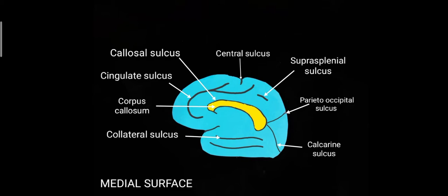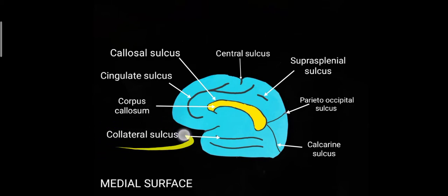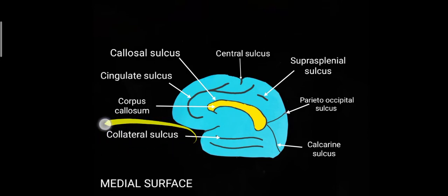These are the important sulci to remember on the medial surface: the callosal sulcus, the cingulate sulcus, the suprasplenial sulcus, the parieto-occipital sulcus, and the calcarine sulcus. There is also a collateral sulcus visible here, which will be discussed later when we explain the inferior surface.